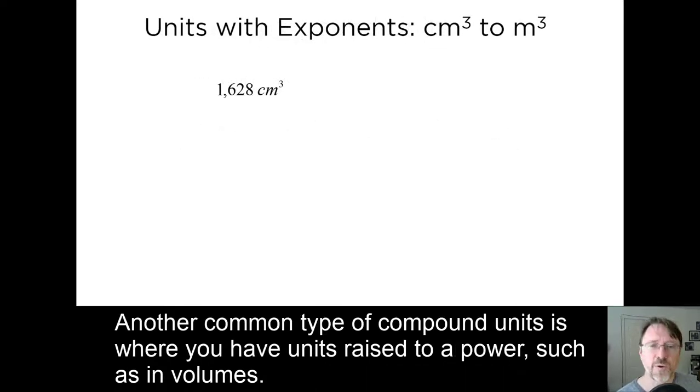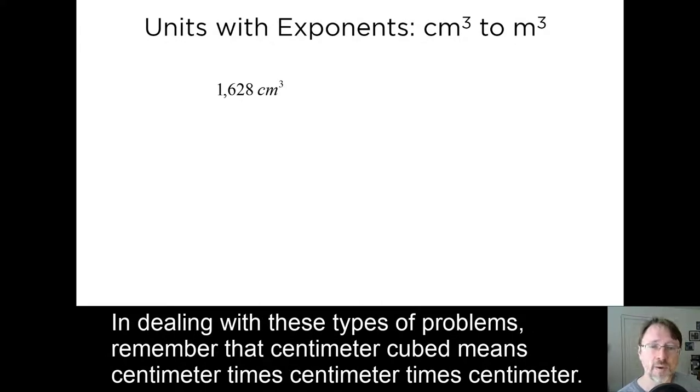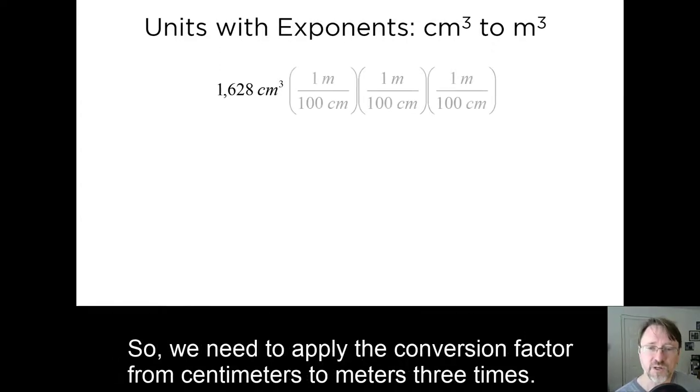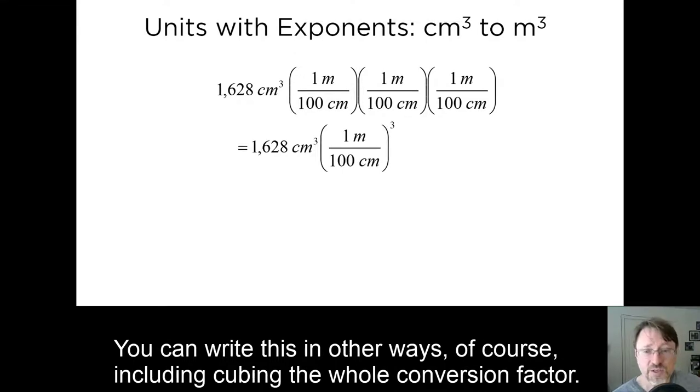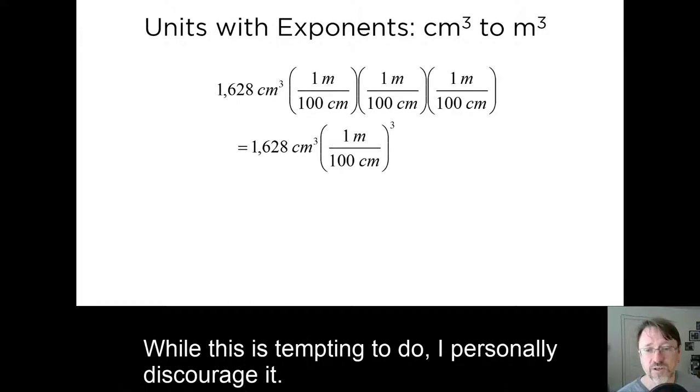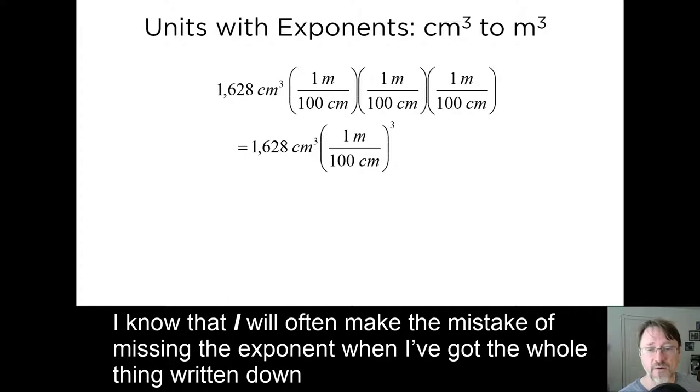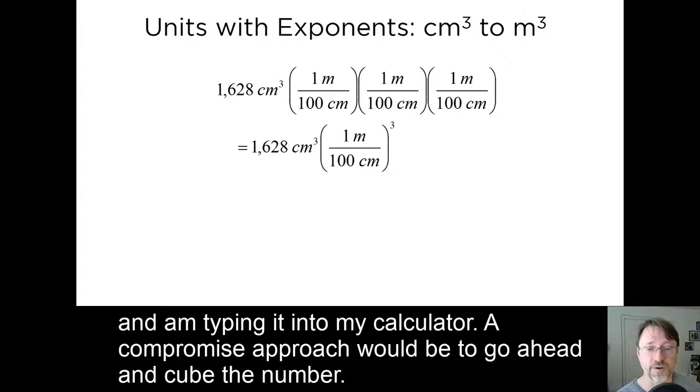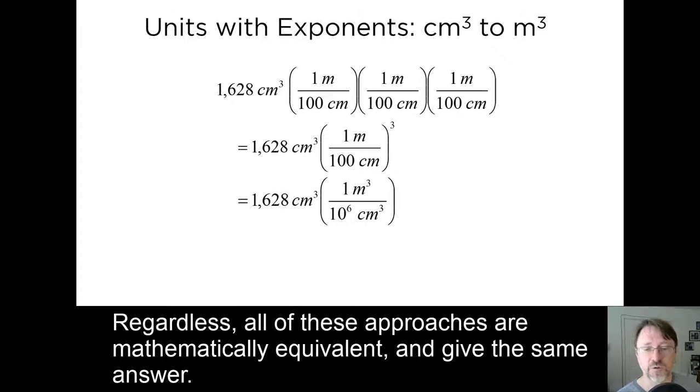Another common type of compound unit is where you have units raised to a power, such as in volumes. In dealing with these types of problems, remember that centimeter cubed means centimeter times centimeter times centimeter. So, we need to apply the conversion factor from centimeters to meters three times. You can write this in other ways, of course, including cubing the whole conversion factor. While this is tempting to do, I personally discourage it. I know that I will often make the mistake of missing the exponent when I've got the whole thing written down and I'm typing it into my calculator. A compromise approach would be to go ahead and cube the number. Regardless, all of these approaches are mathematically equivalent and give the same answer.